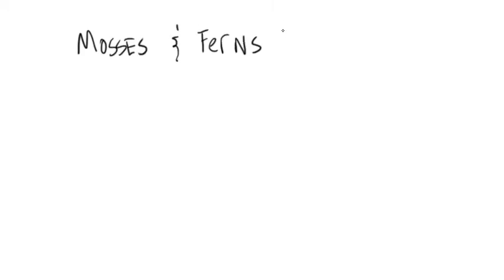Mosses and ferns are standards—they are must-see parts of college introductory botany lessons, mostly because of how beautifully and tangibly they illustrate the alternation of generations, which is another big deal when it comes to plant biology.